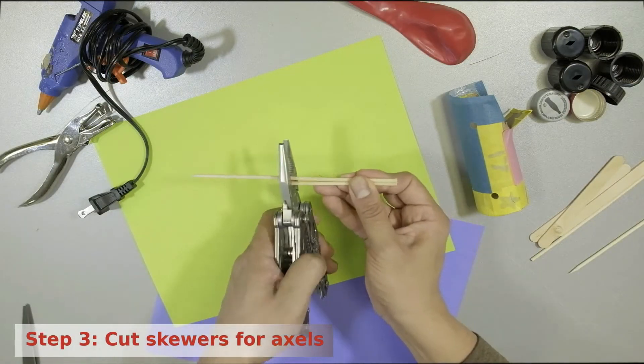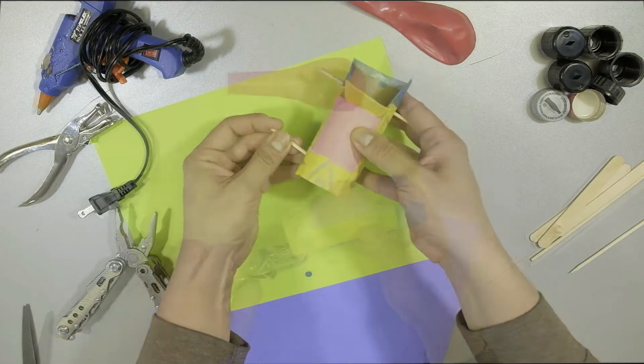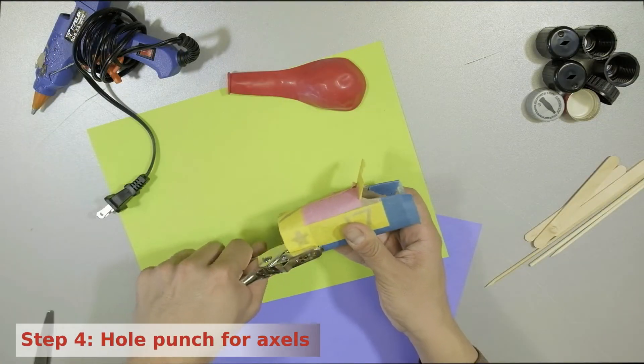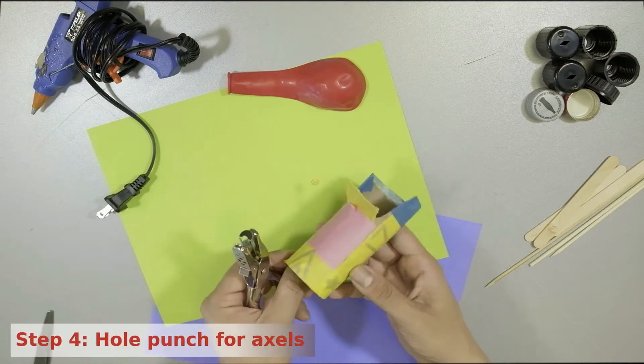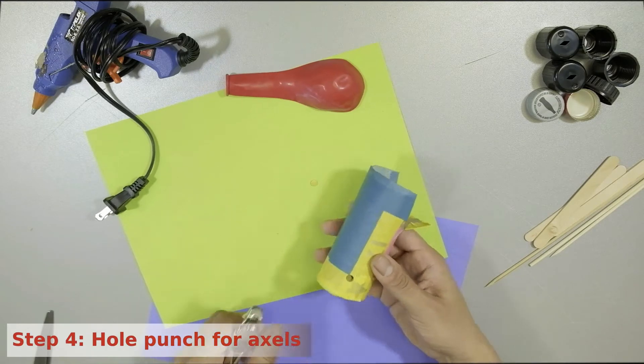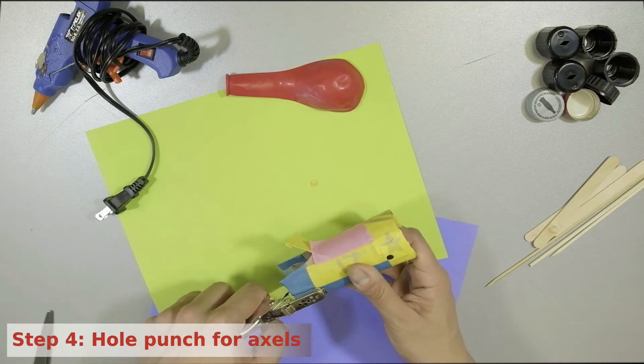Cut your barbecue skewers to make two four-inch axles. Then using the hole punch, punch four holes into the tube. These are for your wheel axles. Two holes across from each other in the front and two in the back.